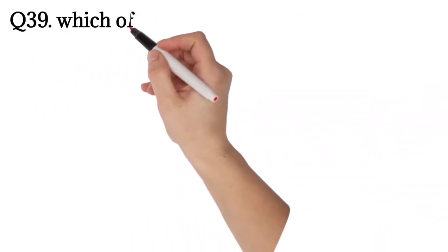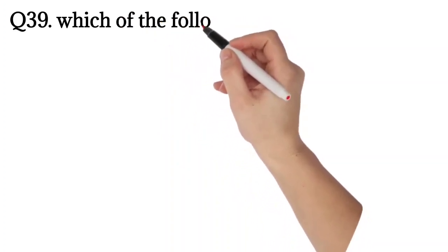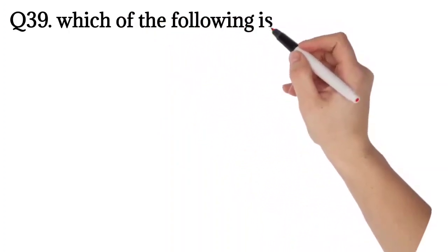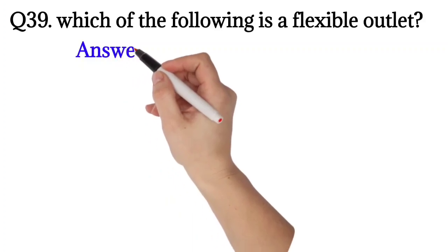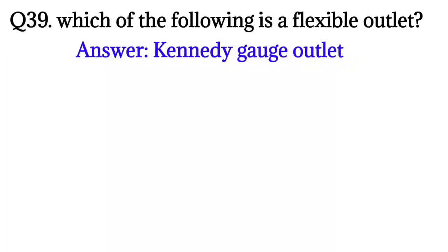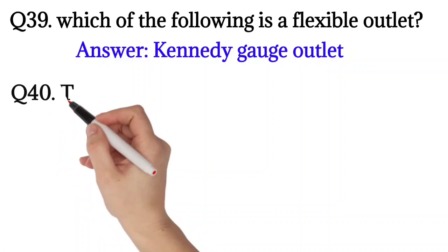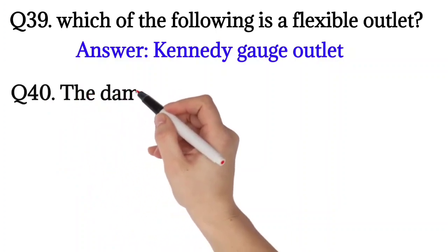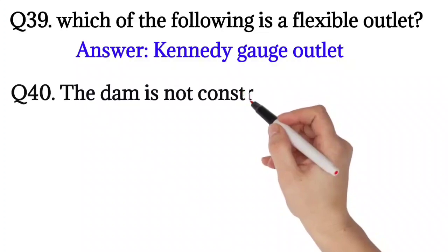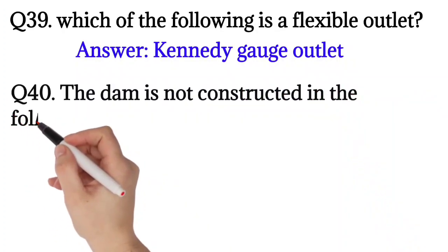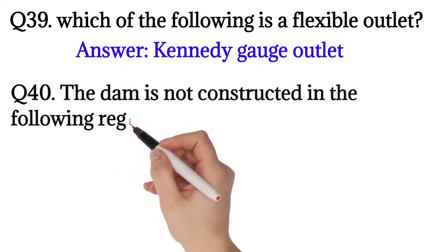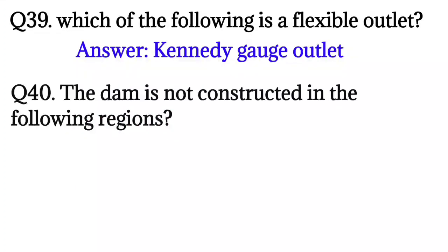Question number 39: Which of the following is a flexible outlet? The answer is Kennedy gauge outlet. Question number 40: The dam is not constructed in the following regions?